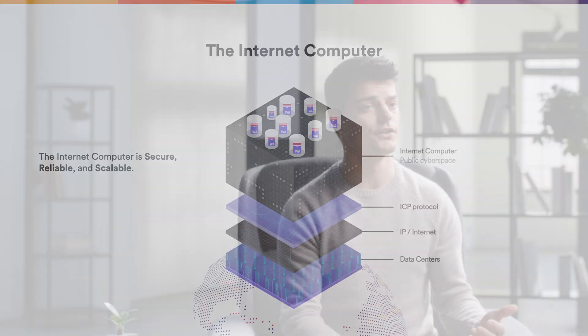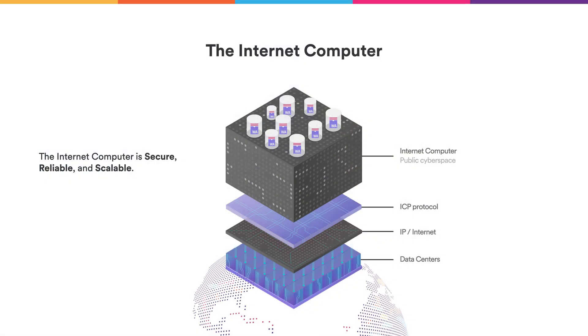The internet computer will allow users to write pieces of software that we call canisters, and these canisters can run on top of the internet computer in a very secure and reliable way. Secure, meaning that the state of my canister will only change according to the rules of my canister and cannot be tampered with. Very reliable, meaning that my canister will not suddenly stop running. We want to achieve these properties while knowing that some machines across the world might have connection issues or might even be malicious.